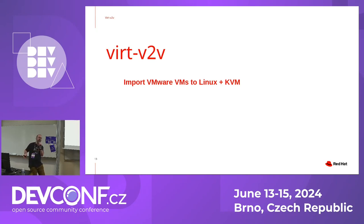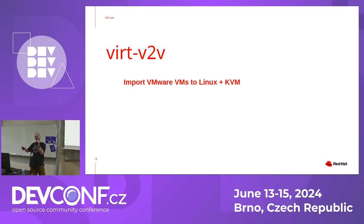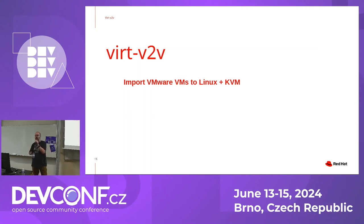Why is this even a thing? Why can't you just copy a VM from VMware and just run it on KVM? The reason is that your VM running on VMware expects a certain VMware-y environment — it's expecting PVSCSI hard disk, VMXNet3 network card. And on KVM, we would prefer you to be running Virtio devices, because that's what we put all of our effort into optimizing, and they're much faster.